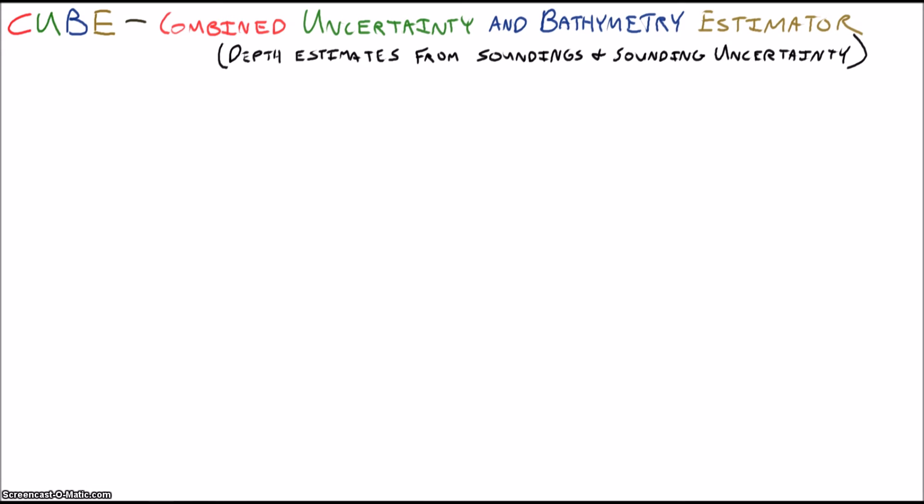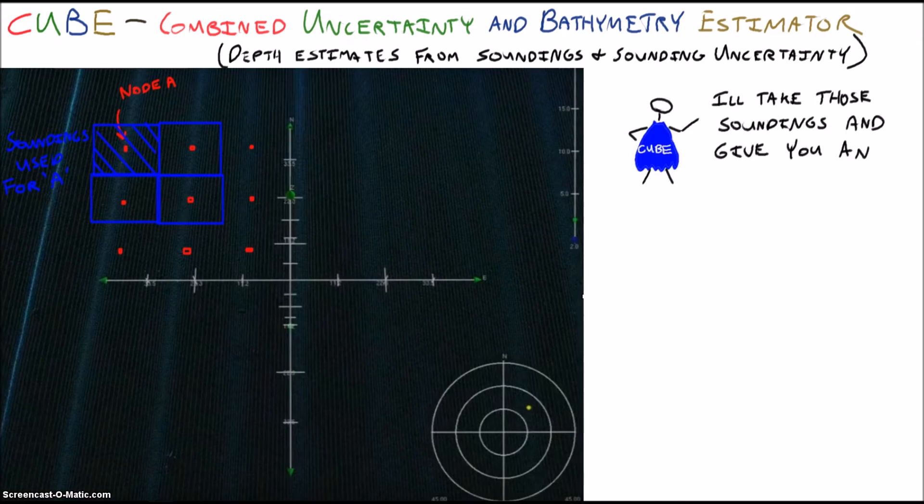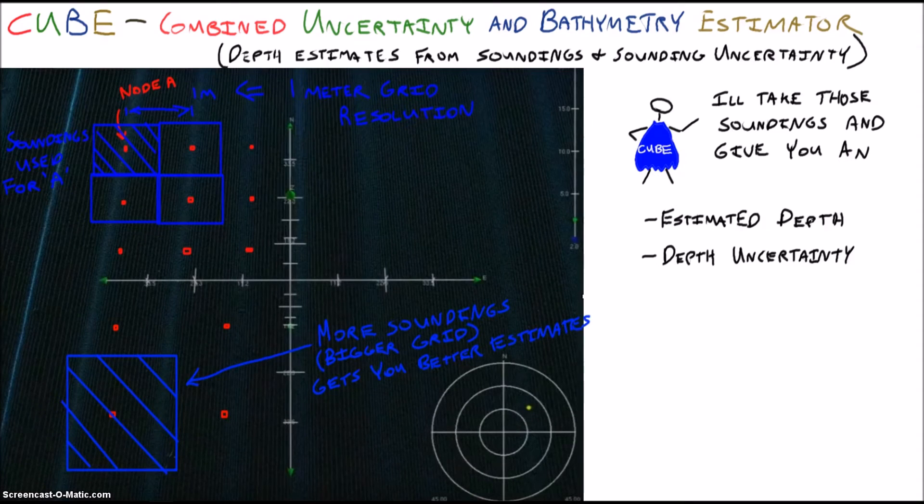CUBE, or the Combined Uncertainty and Bathymetry Estimator, is the algorithm that we use to develop our bathymetry models. CUBE builds a network of nodes over the survey area and establishes estimates of depth and depth uncertainty at each node based on the surrounding soundings. They can be placed anywhere, but for efficiency we generally arrange them in a regular grid over the survey area. When we build a one meter CUBE surface, we are basically stating that we want nodes spaced one meter apart.